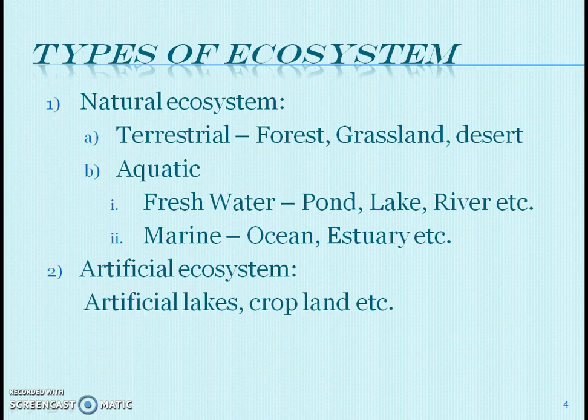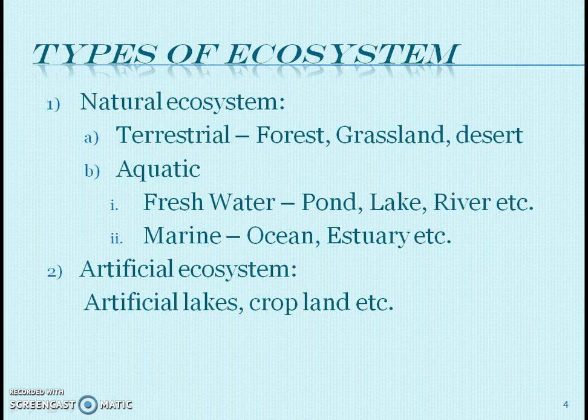Welcome to the second section of this institute. Our second section is related to types of ecosystem. In the last session we learned concepts of ecology, components of ecosystem, and types of ecosystem such as natural and artificial ecosystem. In this session we will study in detail types of ecosystem — forest, grassland, desert, pond, river, ocean, and estuaries.